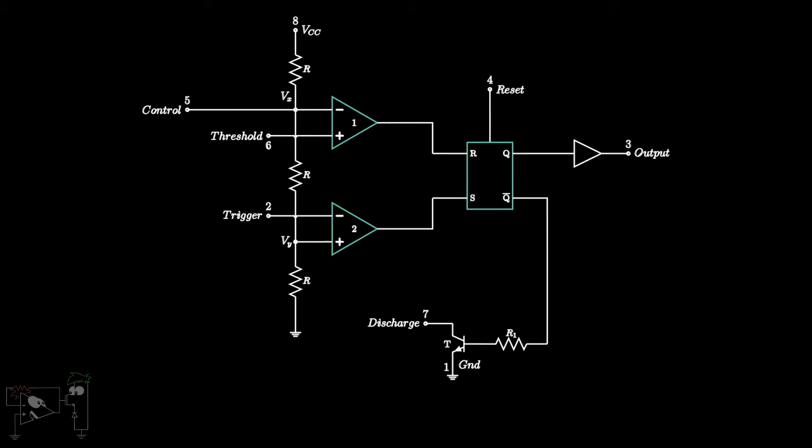Let's see the voltage divider block first. We have three resistors of value R lined up from VCC to ground. As the comparators are op-amp based, no current flows through their input. Hence, we can use voltage division between these resistors directly.